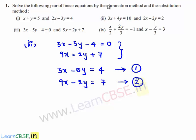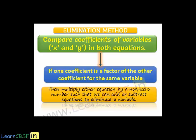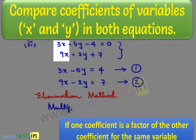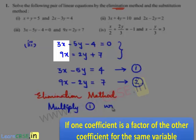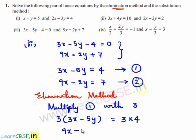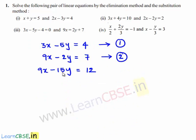First, let us solve the given pair of equations by the elimination method. Multiply equation 1 with 3. That is, 3 times of 3x minus 5y equals 3 times 4. So 9x minus 15y equals 12. Let this equation be number 3.